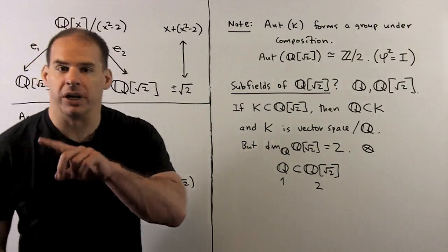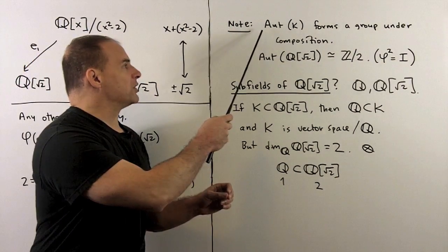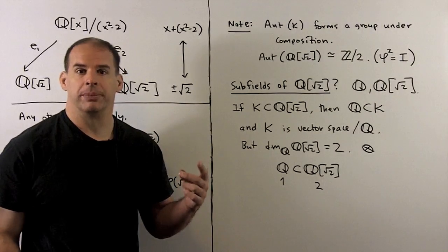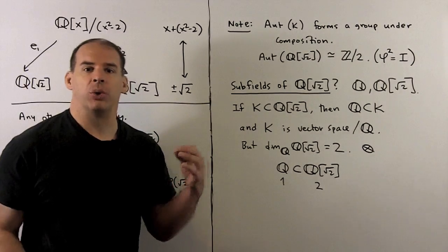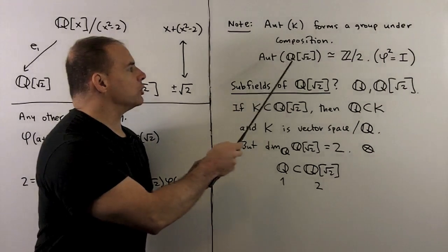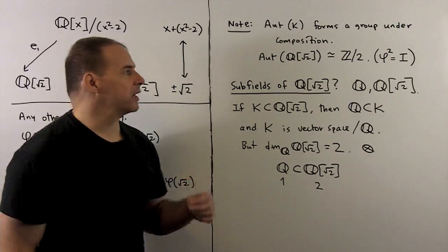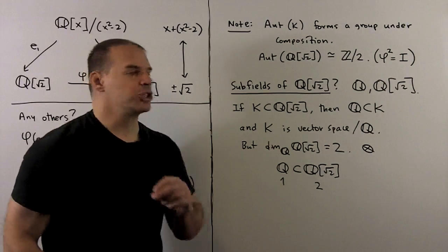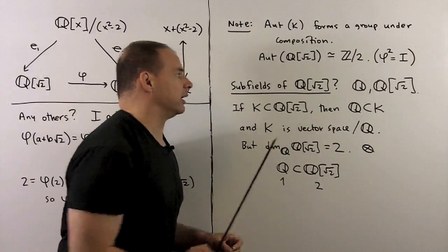To bring in group theory: the automorphisms on a field form a group under composition. In this case we only have a two-element group. The automorphisms of Q(√2) as a group are isomorphic to Z/2Z. It's a simple check that phi squared equals the identity.